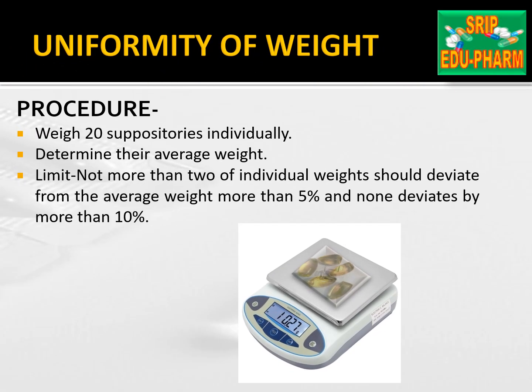1. Uniformity of weight. In this procedure, weigh 20 suppositories individually, then determine their average weight and compare with limits. Not more than 2 of individual weights should deviate from the average weight by more than 5%, and none should deviate by more than 10%.